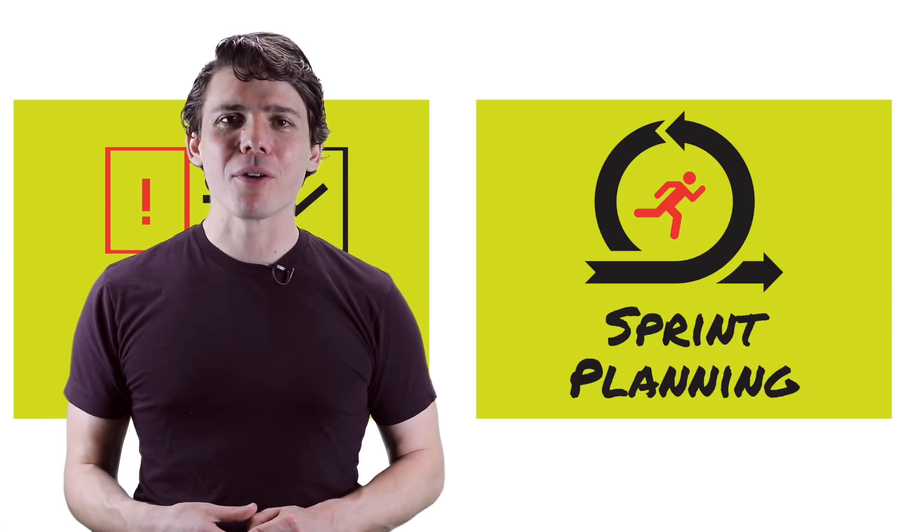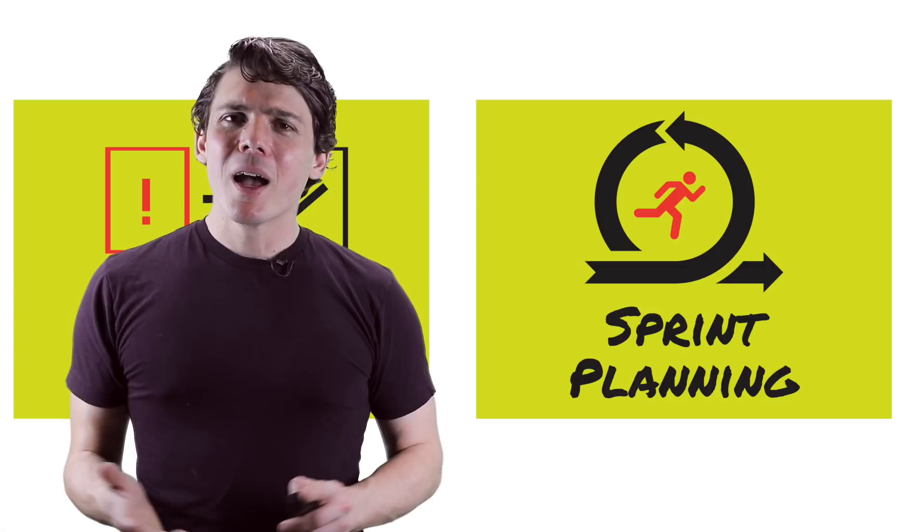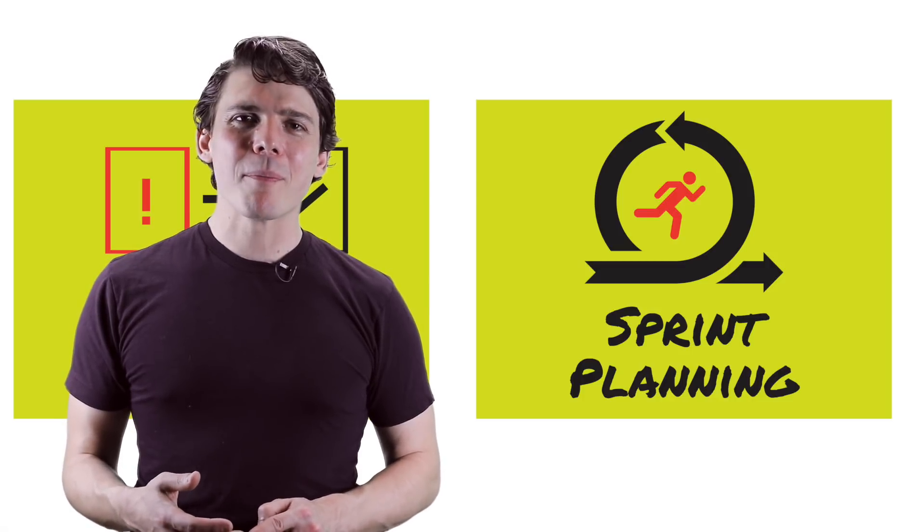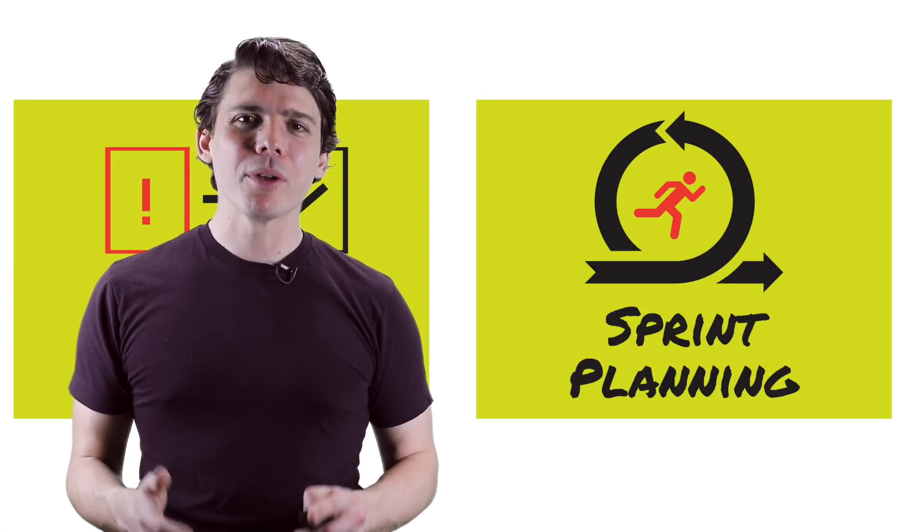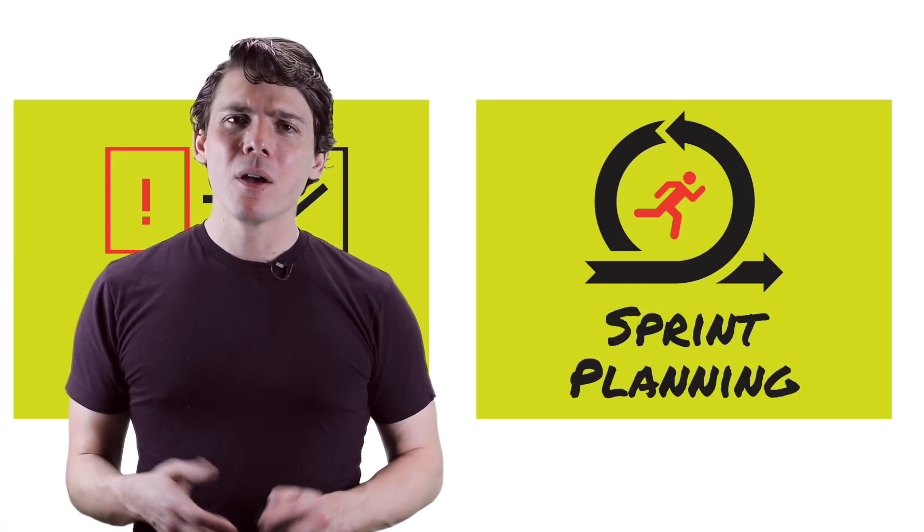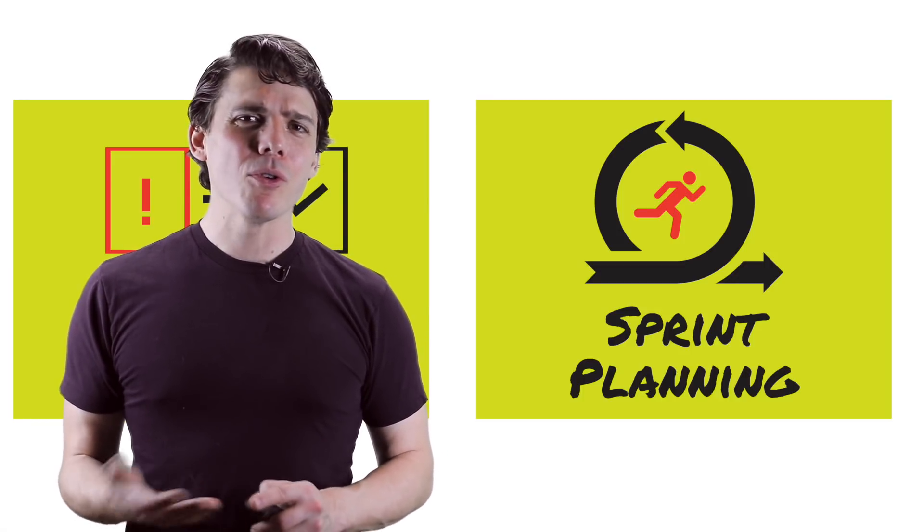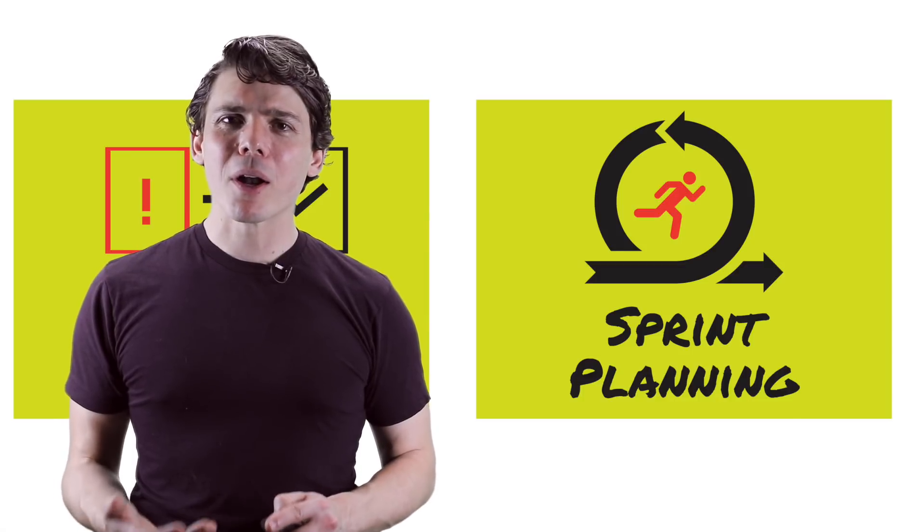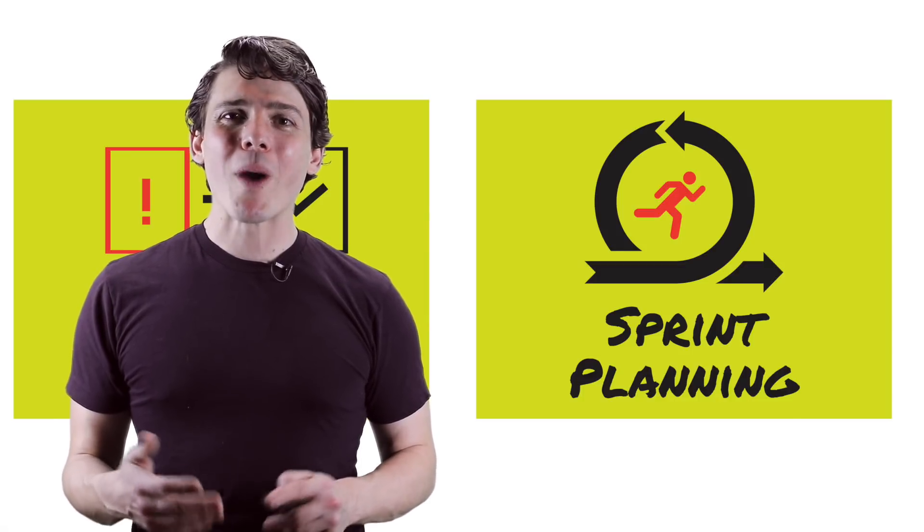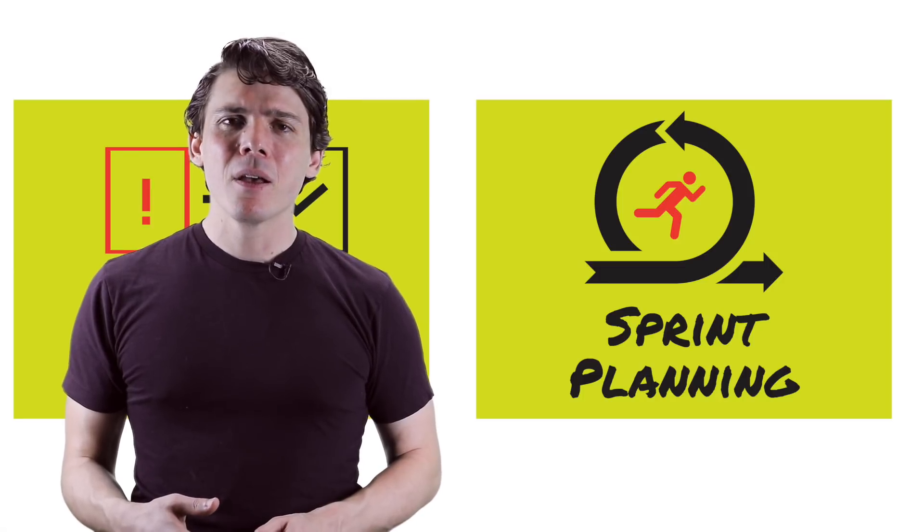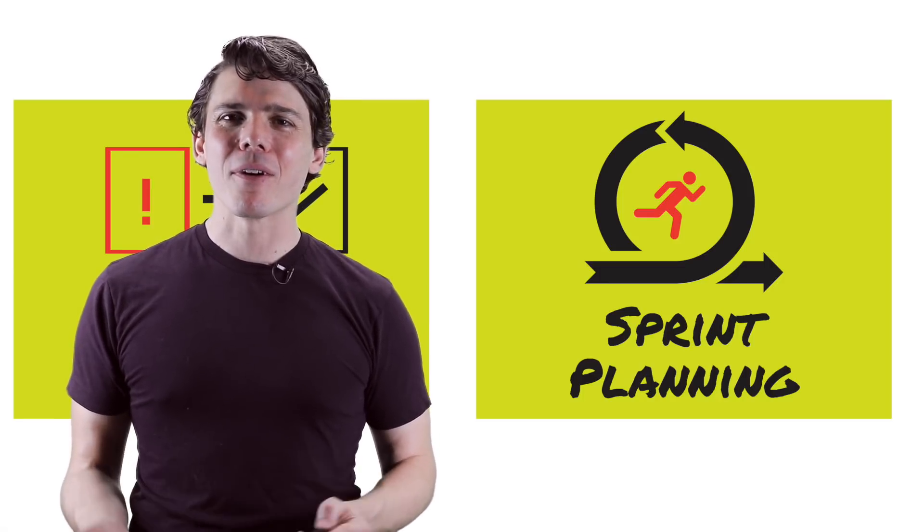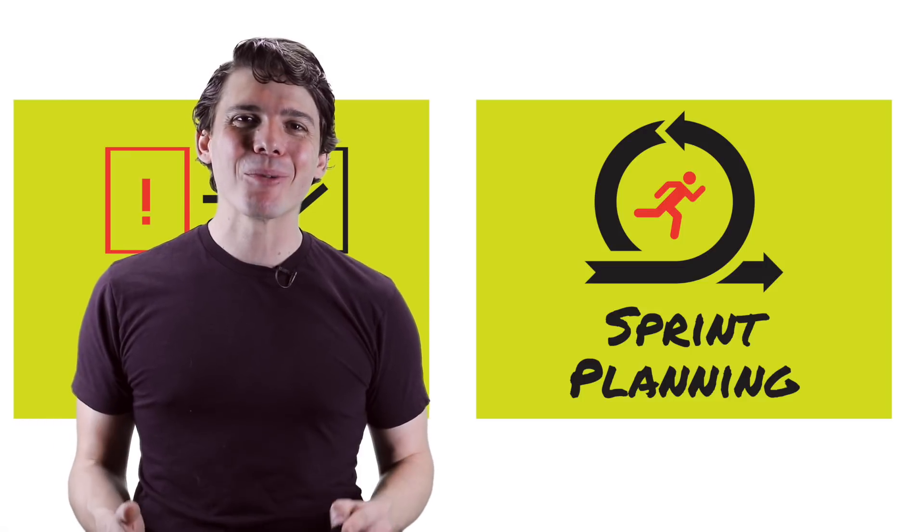Teams often overcommit, either due to pressure from the product owner or a naive optimism. The Scrum Master will discourage this with effective coaching. Having determined a reasonable sprint backlog, the development team decides together how we'll complete the work this sprint. Most teams decompose user stories, bugs, and other product backlog items into more granular tasks, generally taking a day or less.